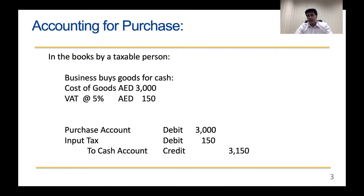Let's brush up our accounting skills. When we do a simple purchase of goods — for example, a taxable person is buying goods where the cost is 3,000 dirhams — UAE has a VAT of 5%, so 150 dirhams is the VAT applicable. The accounting entry is: Purchase account debit 3,000, Input Tax debit 150, and Cash or Payable account credit 3,150.